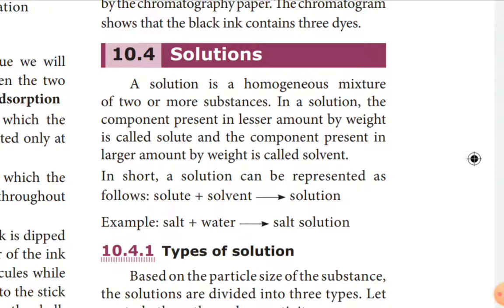A solution is a homogeneous mixture of two or more substances. The components cannot be seen through our naked eye, and we cannot differentiate or easily separate the components, as they are uniformly spread in the solvent. In a solution, the component present in lesser amount by weight is called the solute — for example, sodium chloride or sugar — and the component present in larger amount by weight is called the solvent.